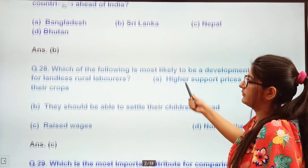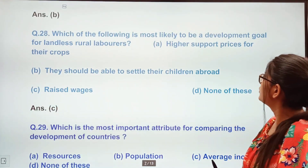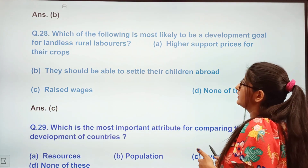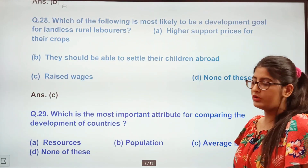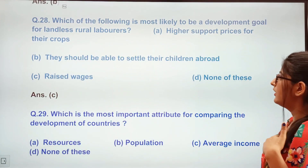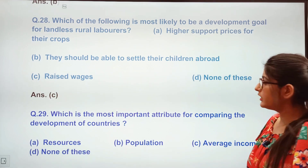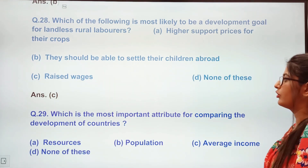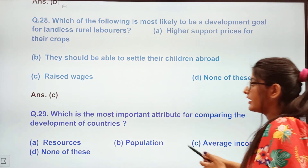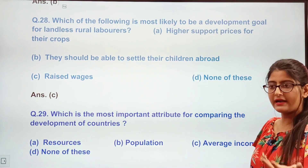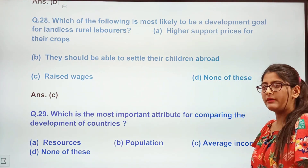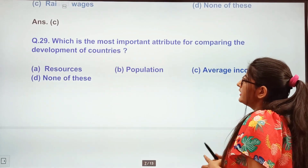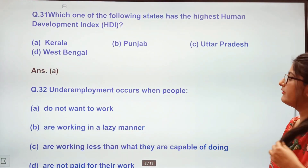Next question: In terms of human development, which of the following countries is ahead of India? The answer is Sri Lanka. Next question: Which of the following is most likely to be a development goal for a landless labourer? Options: they should be settled, their children raised, raised wages, or higher support prices for their crop. The answer is raised wages — since they work on other people's land, they need higher wages.